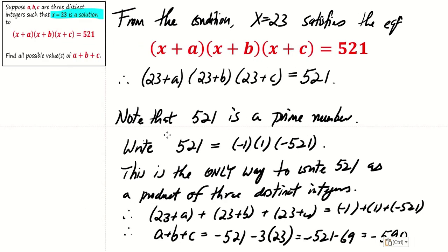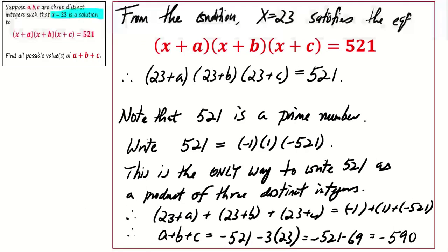This problem is ideal for beginners. It emphasizes the knowledge that 521 is a prime number and the uniqueness of the distinct integers A, B, and C. In conclusion, there's only one answer to this question, which is -590.